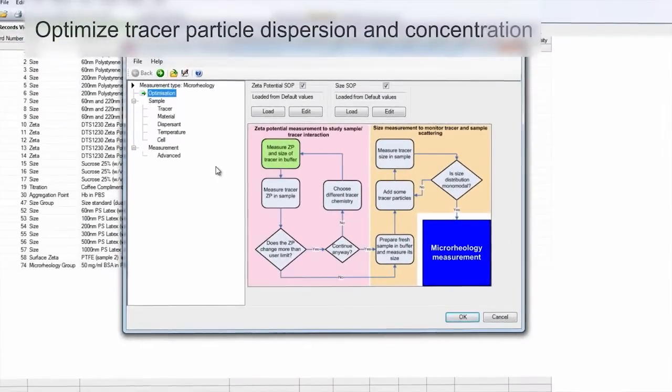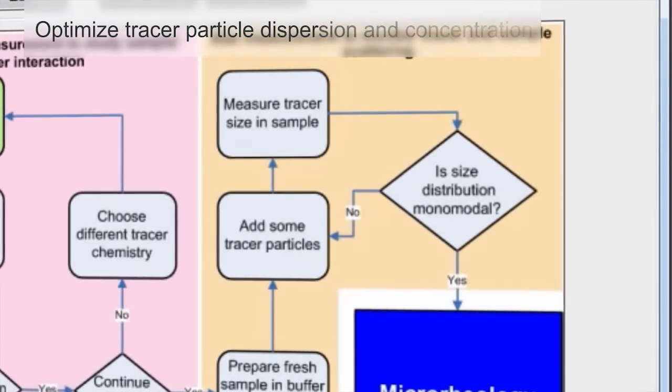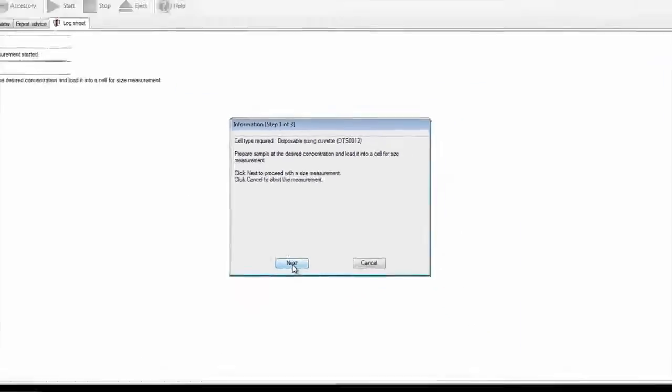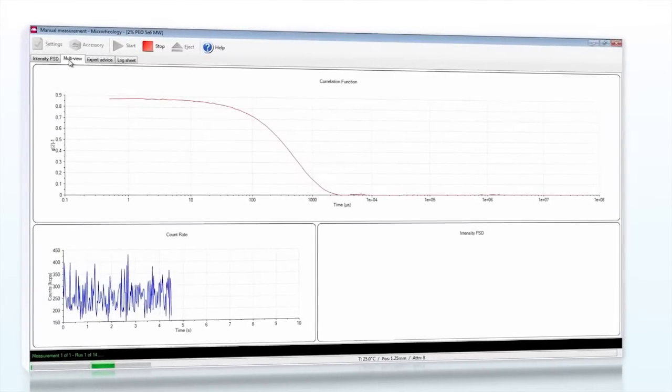Further key requirements are for the tracer particles to be of an appropriate size and to be well dispersed in the sample. They should be present at a concentration level such that the scattering signal is dominated by the tracer particle scattering as compared to scattering from the sample.